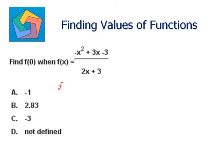So we will substitute x as 0. f of 0 is equal to negative 0 squared plus 3 times 0 minus 3, over 2 times 0 plus 3.